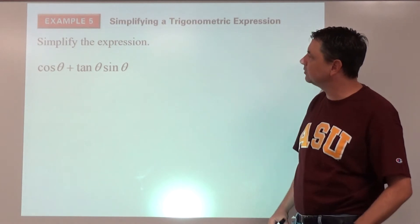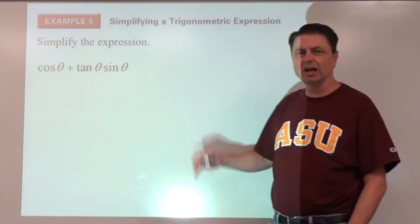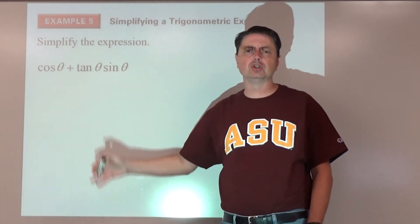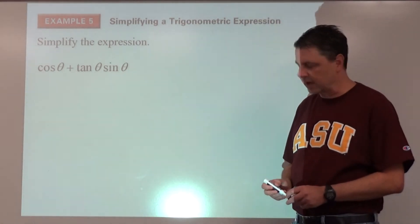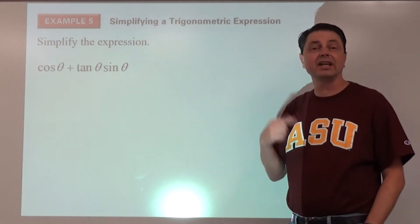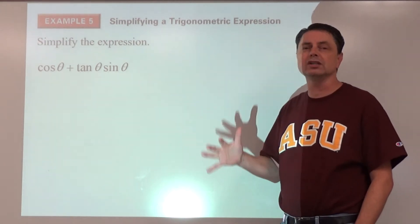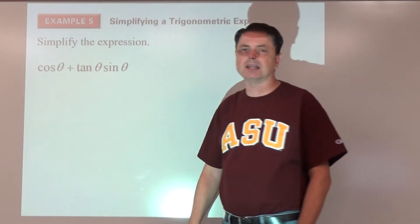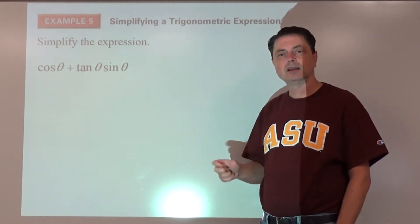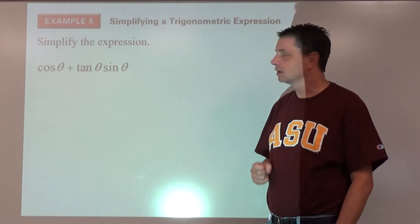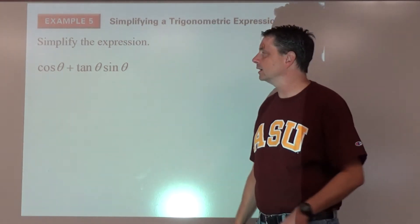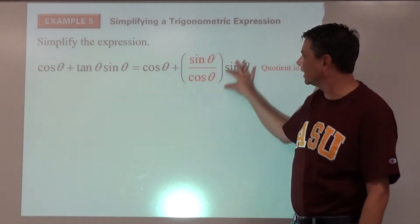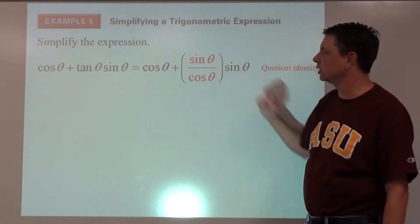Example five: another simplification. This one doesn't lend itself to factoring out a greatest common factor, so a good strategy is to convert everything to sines and cosines. We notice tangent theta — using the quotient identity, we replace it with sine theta over cosine theta.